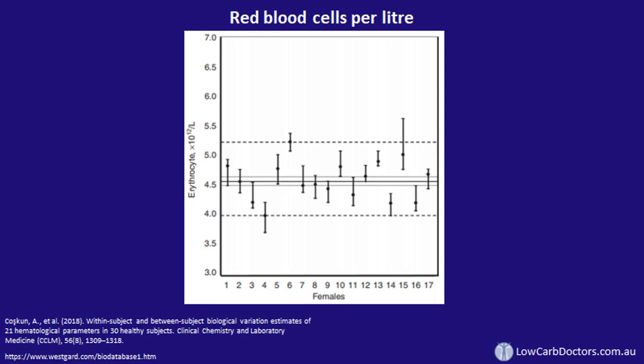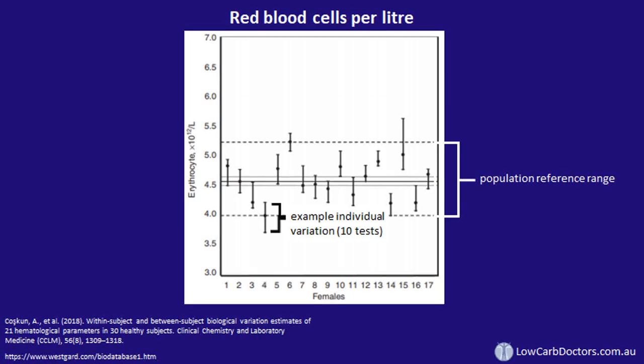In this study, you can see the erythrocyte variation — each individual had 10 repeat blood tests, and the variation for each individual is quite a lot less than the reference range, which is delineated by the dashed lines. So it's more accurate, if you have historical results for a patient, to compare their current results to their previous results rather than comparing to the reference range, especially if they have previous blood tests performed when they were healthy.